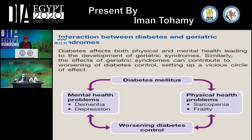This diagram shows the interaction between diabetes and common geriatric syndromes. Actually, they set up a vicious circle. Diabetes can worsen functional and cognitive status of elderly people, resulting in more worsening of diabetes control, creating a vicious cycle.